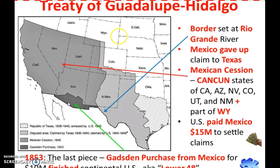The treaty also granted that Mexican citizens living within the Mexican Cession would be given U.S. citizenship and have their property rights protected. The last piece completing the continental United States was the Gadsden Purchase, bought from Mexico in 1853 for $10 million. This territory, now the southern parts of Arizona and New Mexico, was acquired because the U.S. intended to run the transcontinental railroad south through the desert. This completed the lower 48 continental United States.